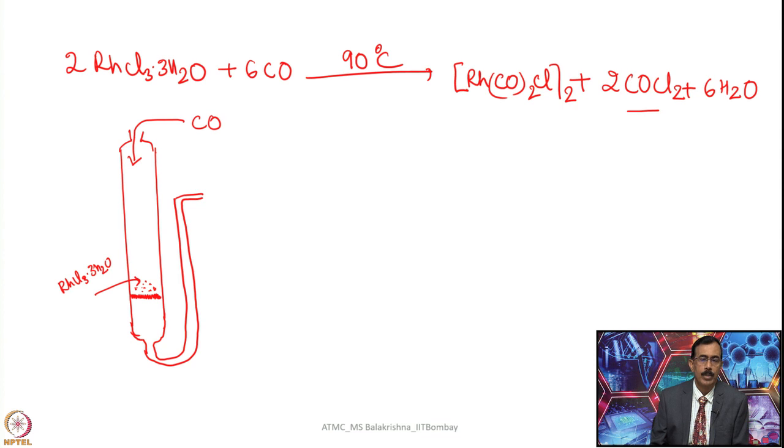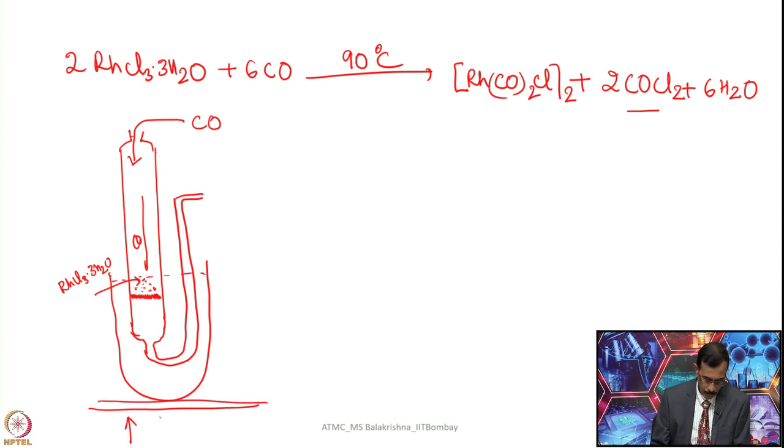You have to bubble about a couple of bubbles per second, very slow to minimize wastage of carbon monoxide, it is also very poisonous. Then what happens? It will keep on coming like this because of positive pressure and it touches here. It will start moving carbon monoxide and this entire place is immersed up to here in liquid paraffin and heated to 90 to 95 degrees centigrade.